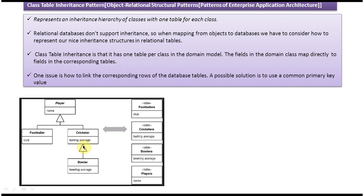How can we represent this in a database — how do we define tables to store Bowler, Cricketer, and Footballer information? As per the class table inheritance pattern, we define one table for each class. So Player has a Players table, Footballer has a Footballer table, Cricketer has a Cricketer table, and Bowler has a Bowler table.